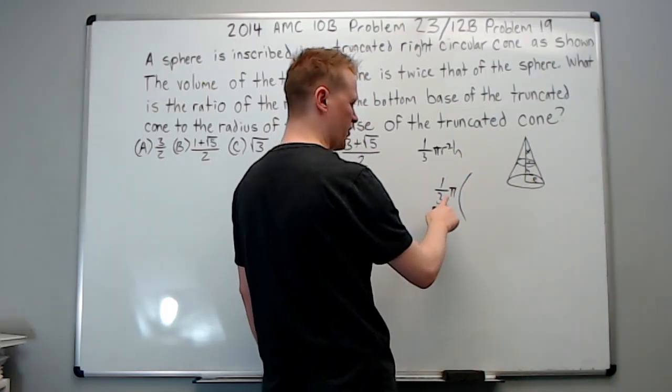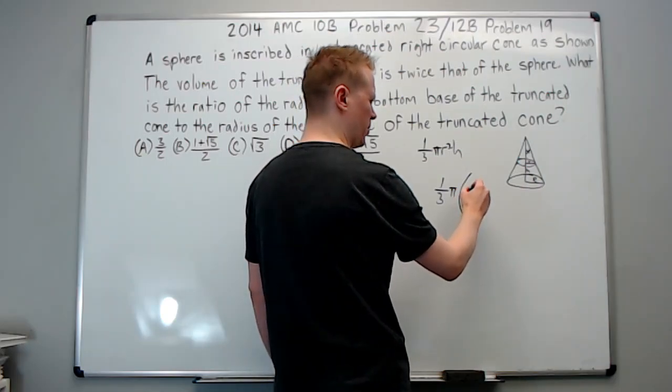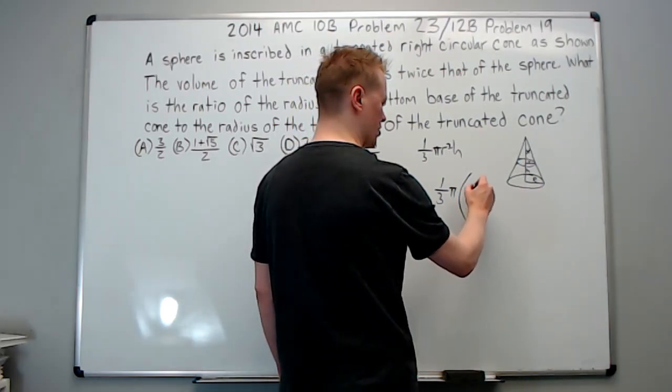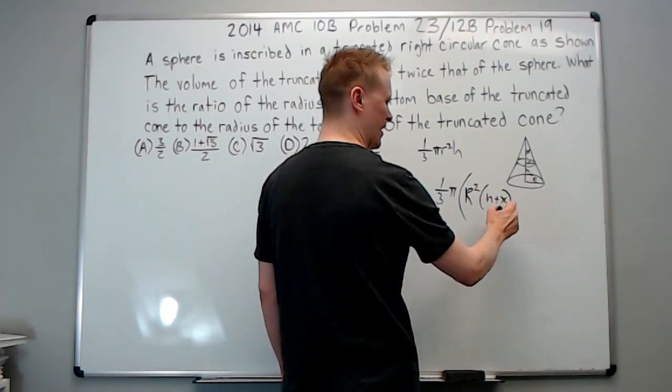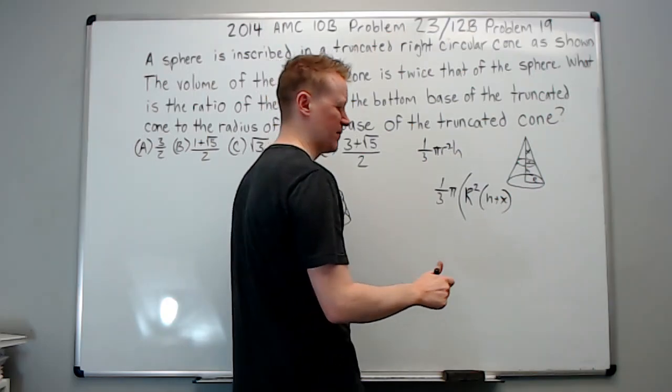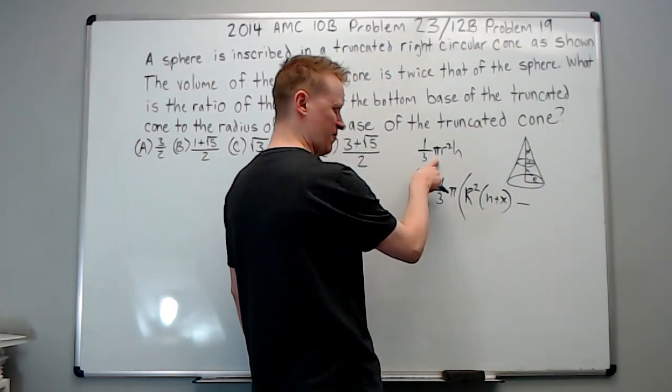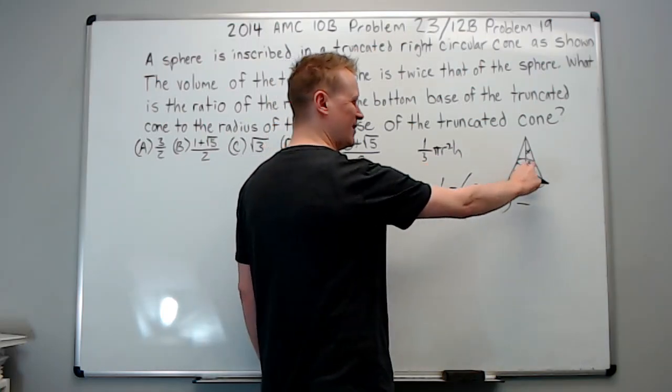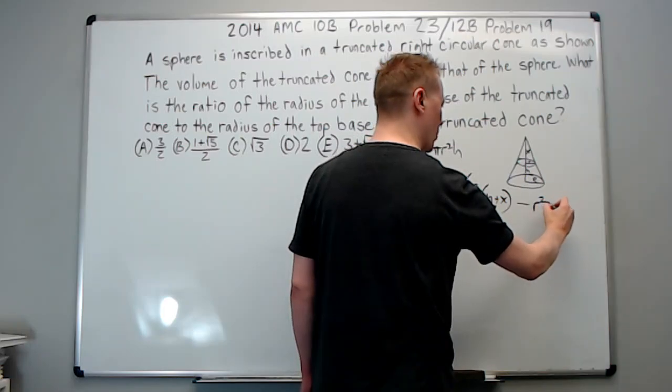But we have a big R, so we're going to put the one-third pi is in both, right? So we'll put one-third pi big R squared h plus x, because the height of the big cone is this x plus the height of the frustum. And then minus the same formula, one-third pi little r squared times its height. So it's r squared x.